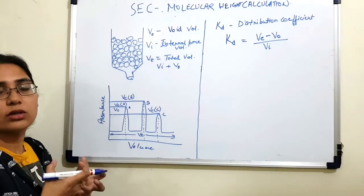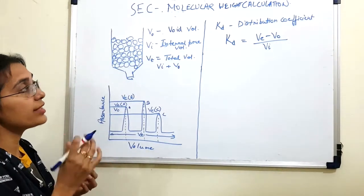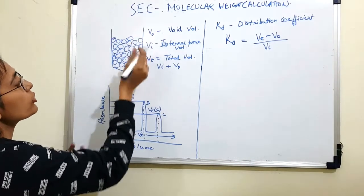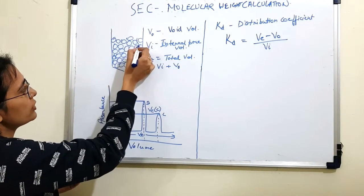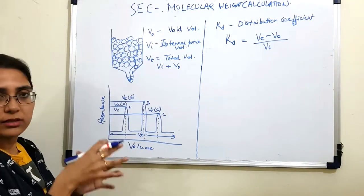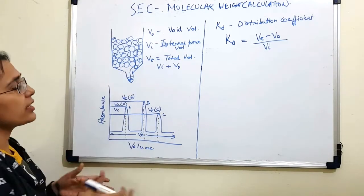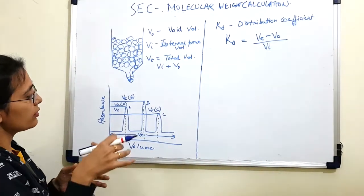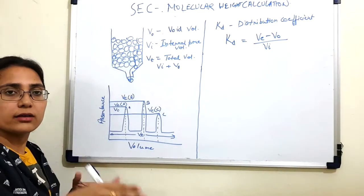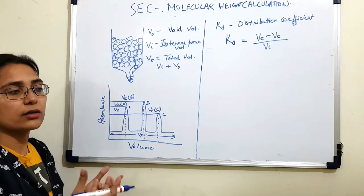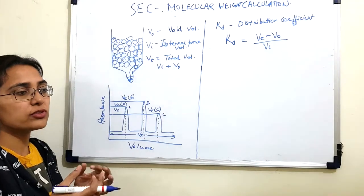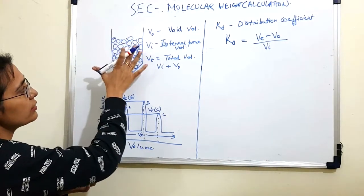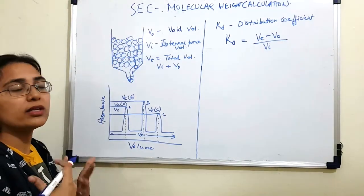When you subject your sample to size exclusion chromatography, there will be components whose molecular size is larger than the largest pore size of your resin. Those molecules will not enter the pores and will leave through the void volume — they are the first to be eluted out of the column. After that, molecules that fall within the pore size range of the resin are separated in decreasing order of molecular size. Finally, molecules with a size smaller than the smallest pore size enter all the pores and are the last to be eluted.